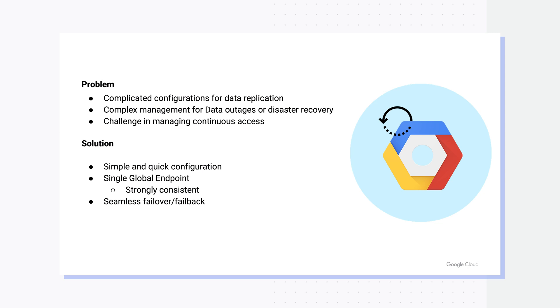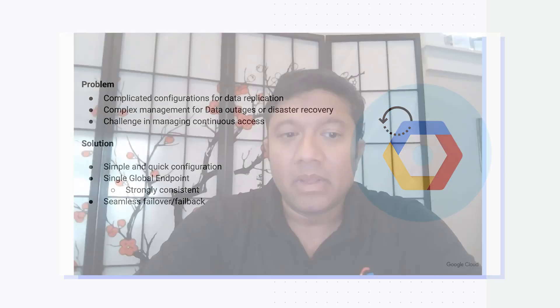Simply put, our goal is to ensure we resolve all of these customer challenges. We keep it simple and easy for customers to configure and let us manage the complexity at the back. Also, despite having data spread across multiple locations, we want to make sure it's truly distributed and maintained in a single namespace. Maintaining strong consistency is very critical for us and for our customers as well. And in any unfortunate disaster where region failures do happen, we want customers to seamlessly be able to failover and failback, reducing the customer effort down to zero.